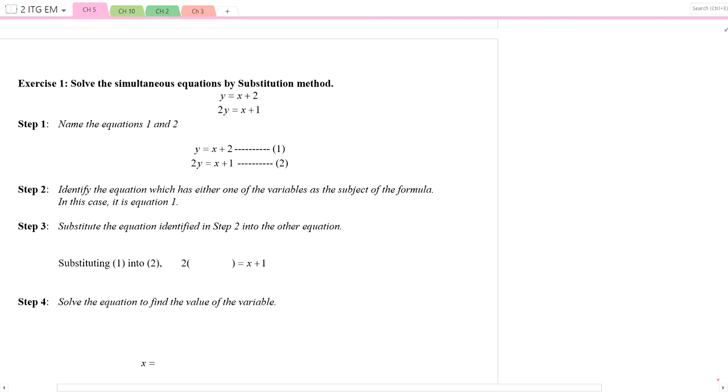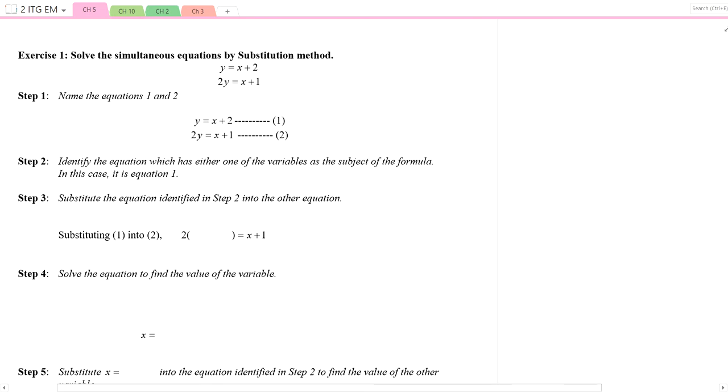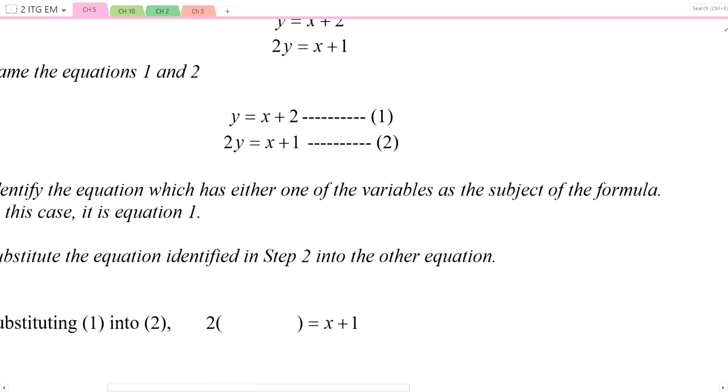This is a video on Chapter 5, Part 3, Solving Simultaneous Equations Using a Substitution Method. When you are given a pair of simultaneous equations like this, the first step is to name them equation number 1 and equation number 2.